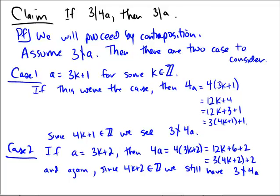And notice that since this was approved by contrapositive, we assumed the negation of the consequent, and we established that in the two cases that hold, the two potential cases here, in neither case we have 3 divides 4a. In other words, in both cases, 3 doesn't divide 4a. So our claim follows by contrapositive.